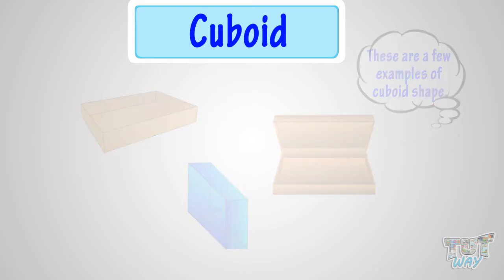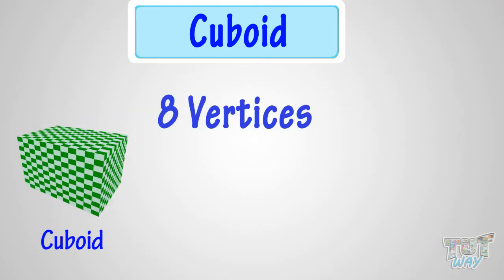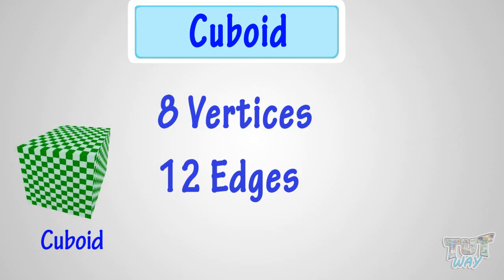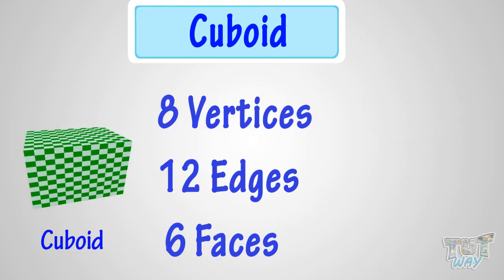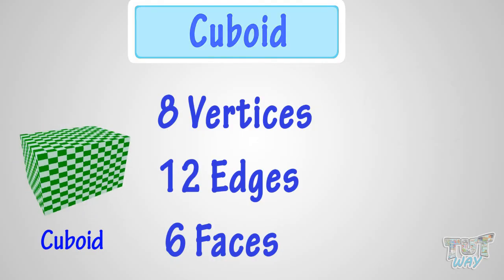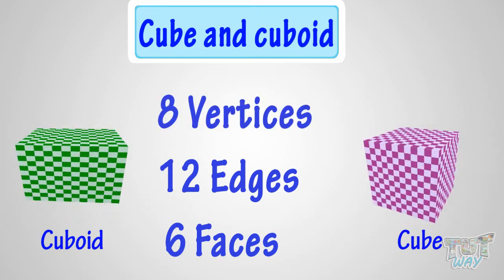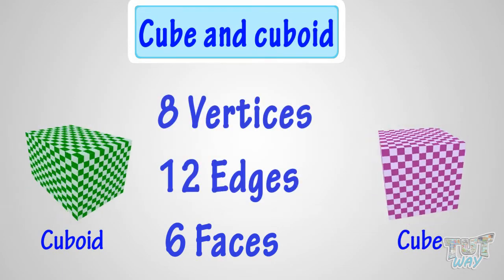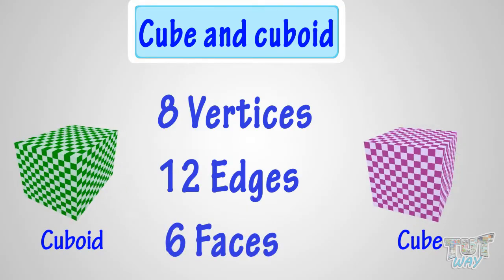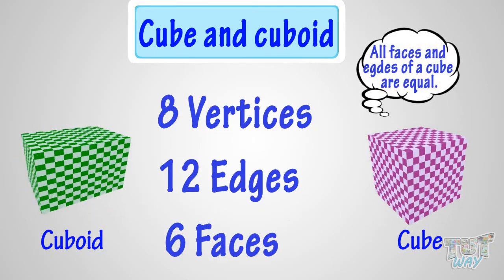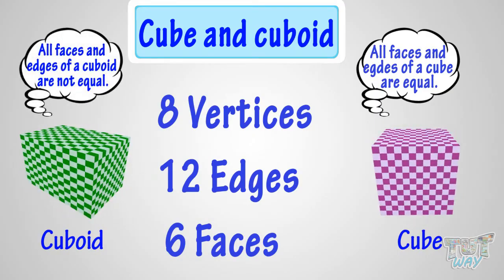So what have we learned? We have learned that a cuboid has 8 vertices, 12 edges, and 6 faces. We have also learned that both cube and cuboid have 8 vertices, 12 edges, and 6 faces. The only difference is that a cube has all edges and faces equal, but not in the case of a cuboid.